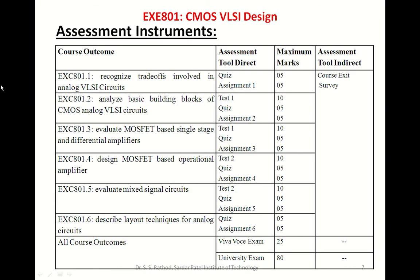Assessment is very important for any course, and different assessment tools like quiz, assignment, and test will be used. Both direct and indirect assessments will be carried out for all course outcomes. For every course outcome, at least two assessment tools are used. For example, CO1 will be assessed using quiz and assignment one. CO2 will be assessed using test, quiz, and assignment two.